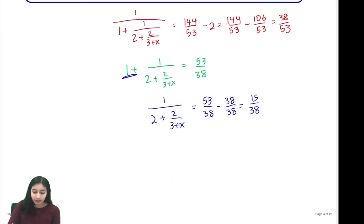Then we flip the expression and we'll see that 2 plus 2 over 3 plus x equals 38 over 15.